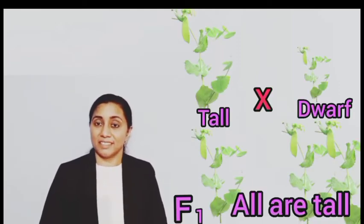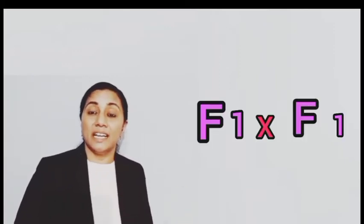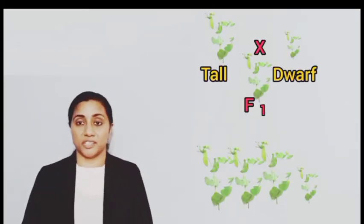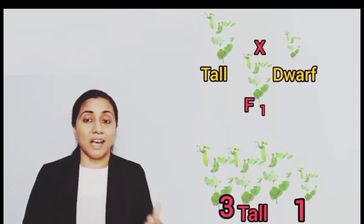Mendel selected one tall plant and crossed it with one dwarf plant. In the first generation, that is F1, all plants were tall. He then crossed the F1 plants with each other. In the second generation, F2, tall and dwarf appeared in a three-to-one ratio — three talls and one dwarf.